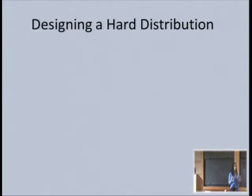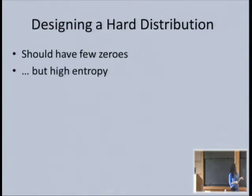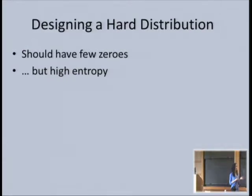Let me first tell you the hard distribution, then I'll show you the notion of information cost we use, because it's tied to the distribution. When designing a hard distribution, we need to balance a few concerns. First, the hard distribution should have few zeros—because the coordinator's strategy of going looking for zeros will be easy if there are many zeros. But on the other hand, we also need the distribution to have high entropy. If the distribution has low entropy, the players can use Slepian-Wolf-like techniques to encode their inputs in a small number of bits and send them to the coordinator. We need a distribution that both has few zeros and has high entropy.